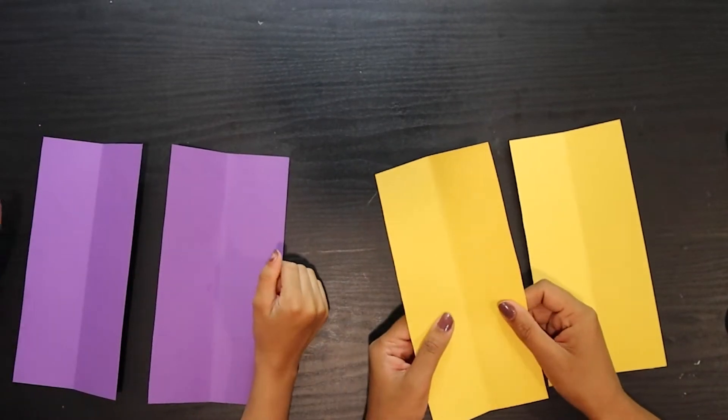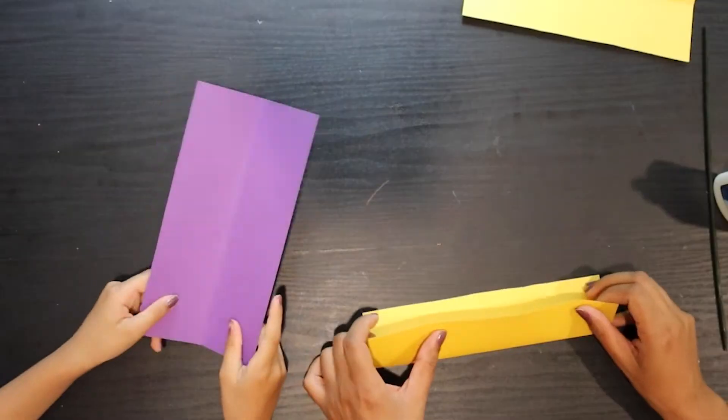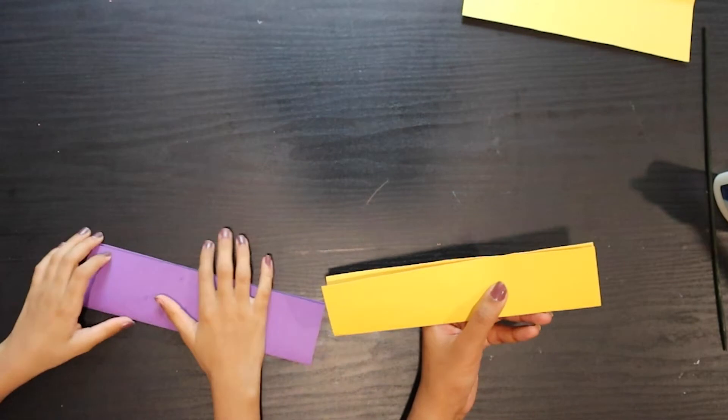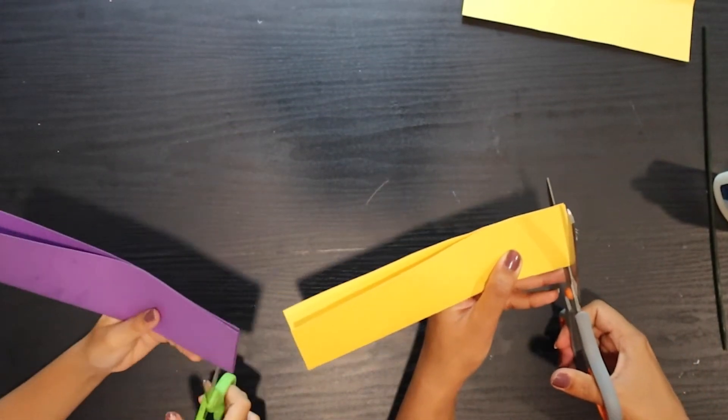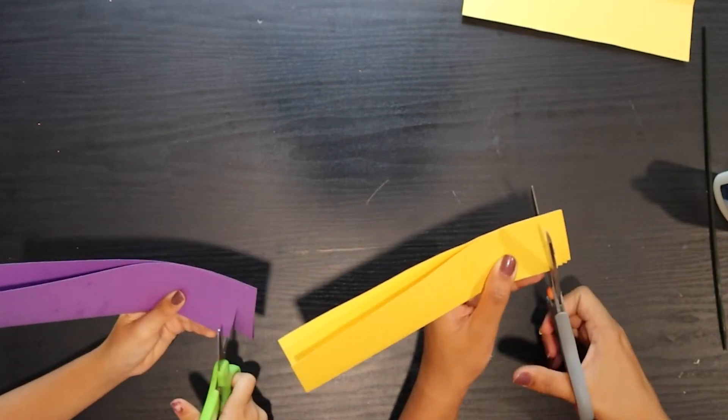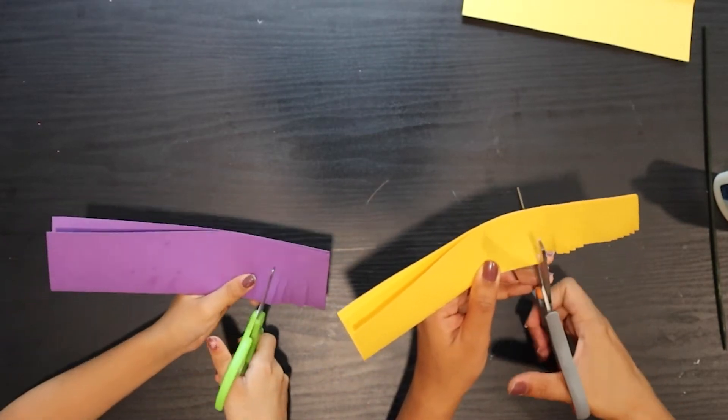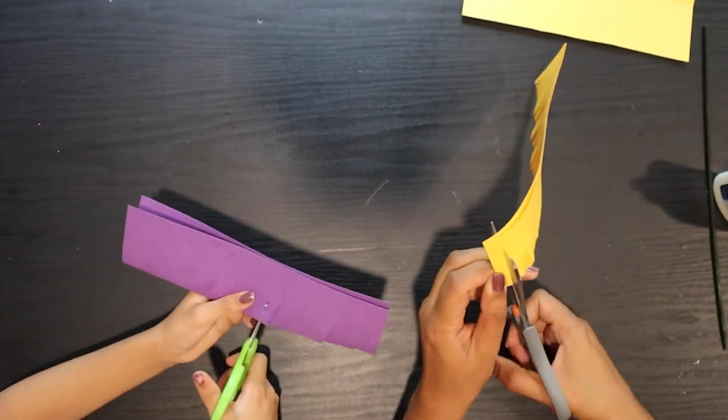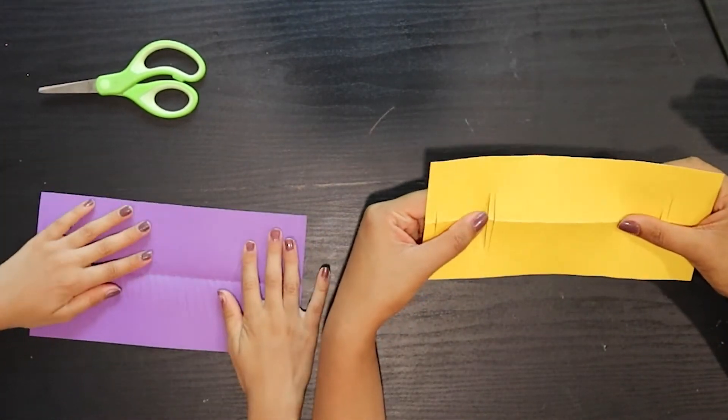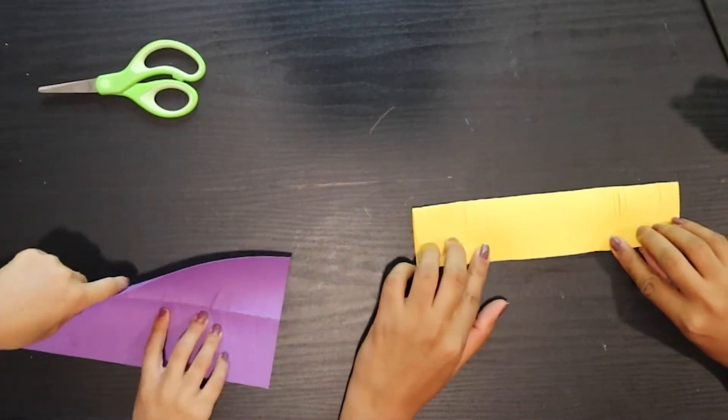So we will need two strips of the same color of paper. Take one strip of paper and fold it. Okay, now take your scissors and start cutting it from the folded side. Yeah! Now, open it up and now fold it in the other direction, like that.